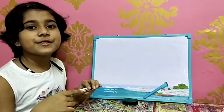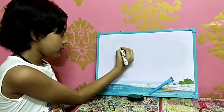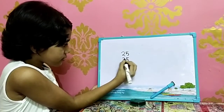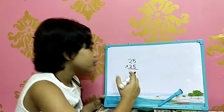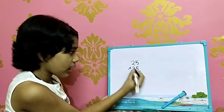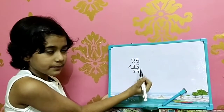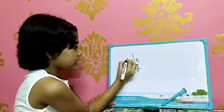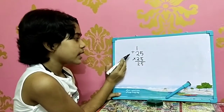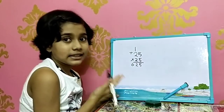We will start with 25 multiplied by 25. First, 5 multiplied by 5 is 25, so we write 25. Then we add 1 to the tens digit: 2 plus 1 is 3. Then 3 multiplied by 2 is 6, so we write 6.